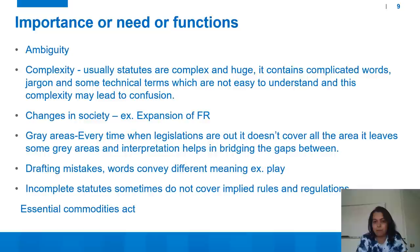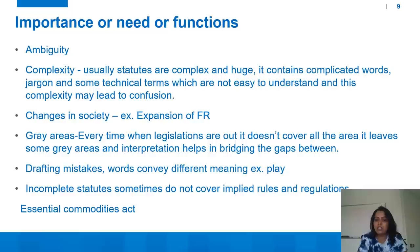Drafting mistakes — words convey different meanings because drafting mistakes happen from the legislature and the judiciary needs to address those mistakes by interpreting the statute in the right way. Also, incomplete statutes — sometimes statutes purposefully do not cover some rules and regulations. Example: Essential Commodities Act. What commodities are essential? The basic list is provided by the legislature, but an administrative authority dealing with that area can add many other commodities. When the judiciary decides a matter relating to the Essential Commodities Act, it needs to interpret whether a particular commodity is essential today or not.